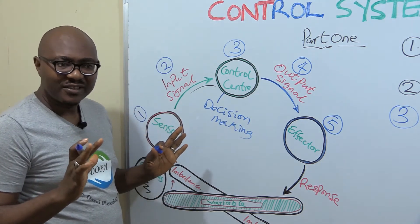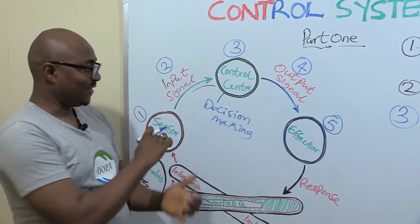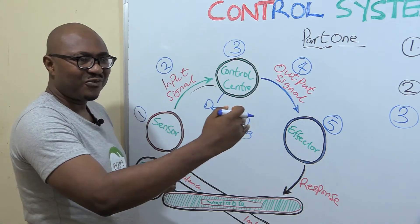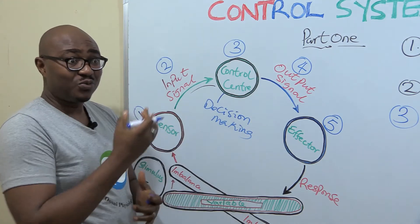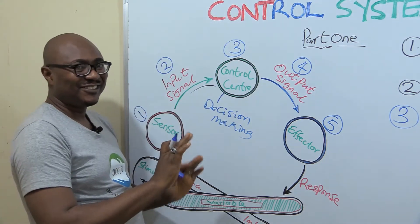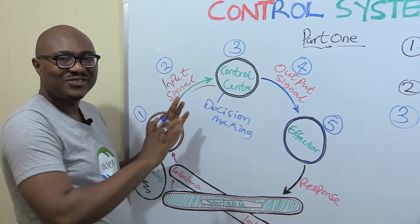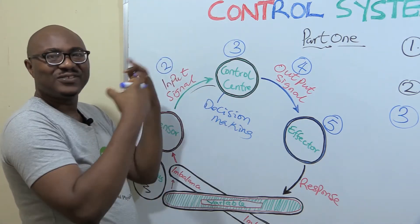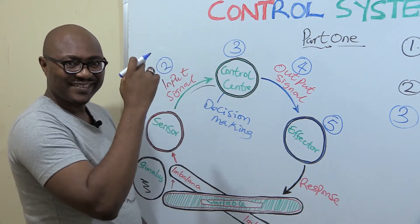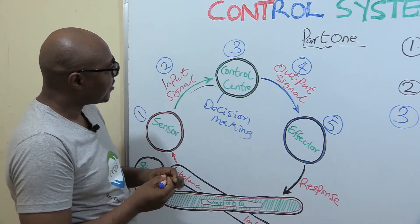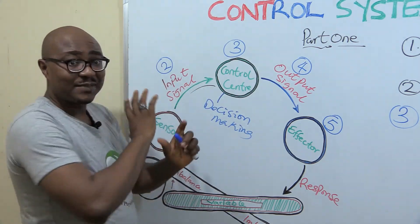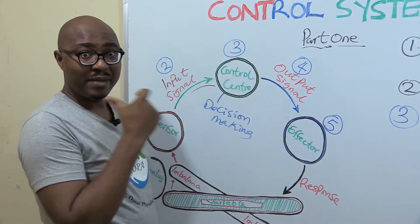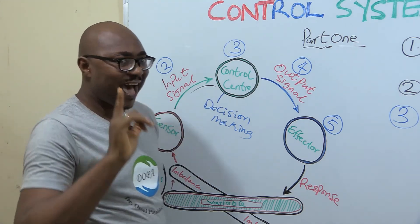But before decision making is done, it first of all processes the information, interprets it, and knows what level of imbalance has occurred. It needs to know how much correction should be done to bring it back. That's what happens at the control center. A lot of the control center happens in the brain - not only the brain, but most of control is in the brain. So interpretation, processing, and then when it has made its decision, it sends a message, a command. We're going to see what happens when it sends that command after this break.